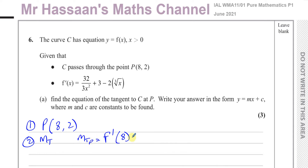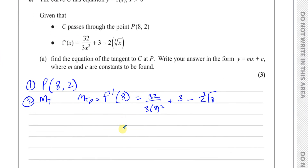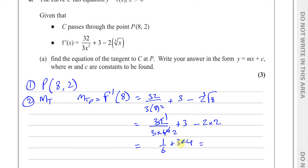Since at point P, x = 8, we substitute x = 8 into the gradient function. That gives us 32 divided by 3 times 8 squared, plus 3, minus 2 times the cube root of 8. This simplifies: 3 × 64 = 192, so 32/192 = 1/6. The cube root of 8 is 2, so we have 1/6 + 3 − 4, which equals 1/6 − 1 = −5/6. So the gradient of the tangent at P is −5/6.